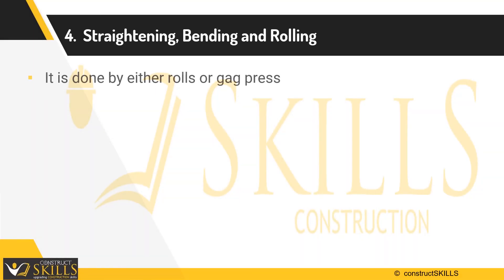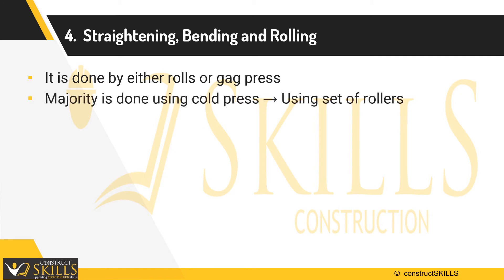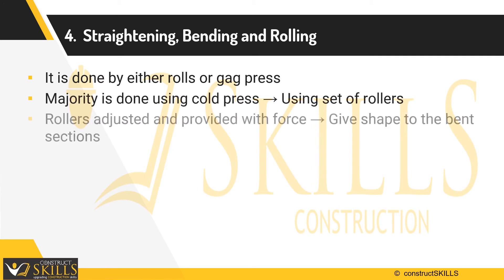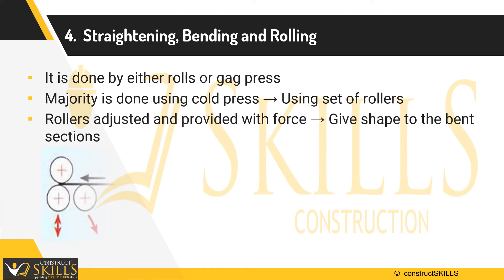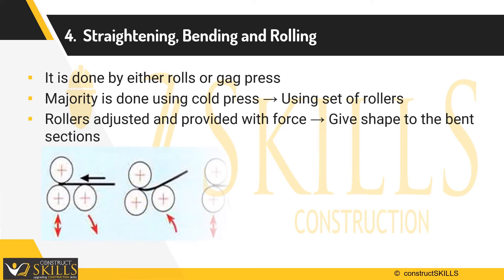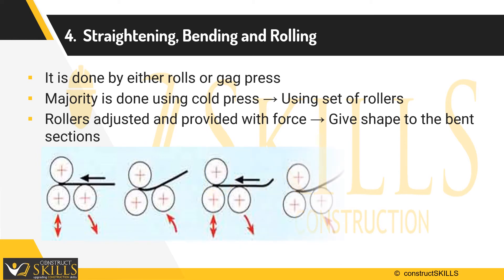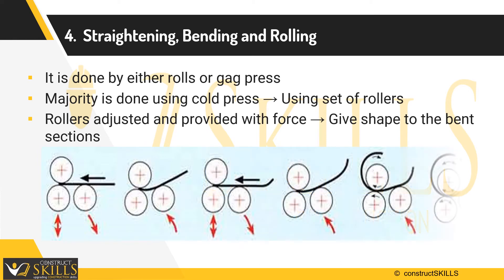Straightening is done by either rollers or gag presses. The majority of curved steel is curved by roller bending, which is a cold process. Roller bending involves progressive bending of a section by passing the member through a set of bending rolls. The rolls are shaped to the cross section of the steel member being curved. Force is applied across opposing sets of rolls, and more curvature is introduced in each pass through the rolls, which is repeated until the desired curvature is achieved.